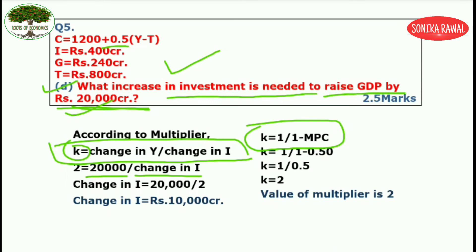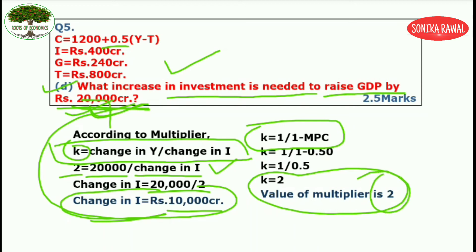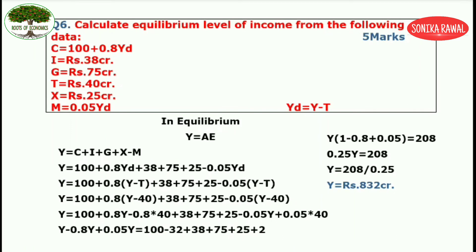Put K as 2 in the formula and solve for change in investment. Change in investment equals 20,000 divided by 2, which gives 10,000 crores. So when investment increases by 10,000 crores, income increases by 20,000 crores — it doubles, because the multiplier is 2. This was entire question number 5 with 2.5 marks for each of the 4 parts, securing 10 marks total.